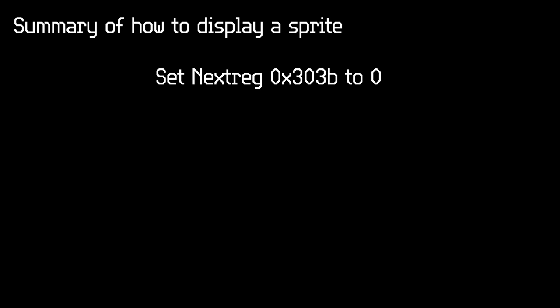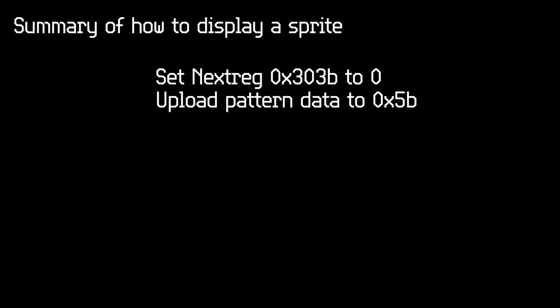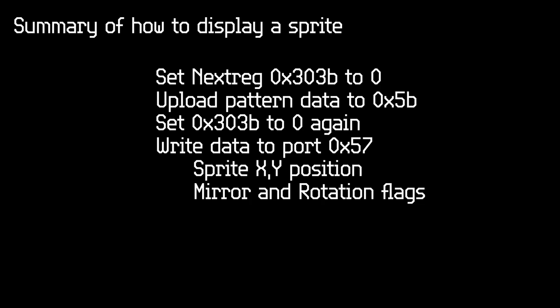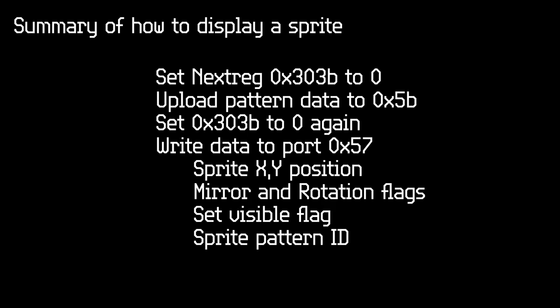To summarize: we need to set Next register 303B to 0 to reset the sprite system, upload sprite pattern data to port 58B, set Next register 303B to 0 again to select sprite 0, then write a minimum of 4 bytes to port 57 — the X and Y position, flags for mirror and rotation, a flag to say whether it's visible, and the actual pattern ID. If you can take an image, convert it into data the Next understands, and display a sprite on screen at a chosen location, you've actually done the hardest bit of the whole thing.